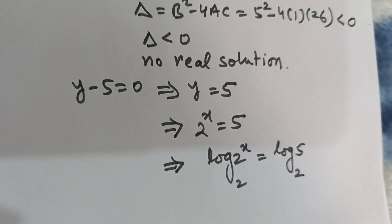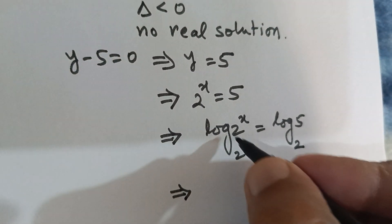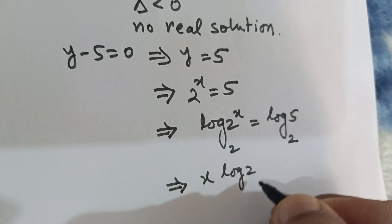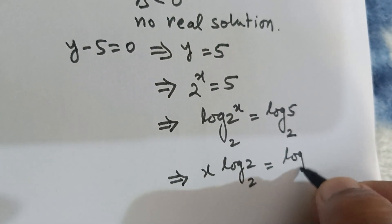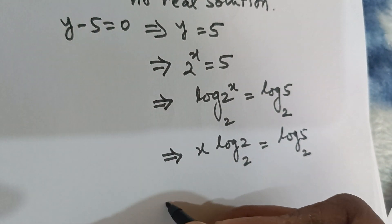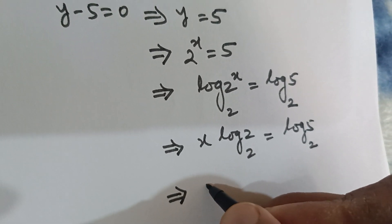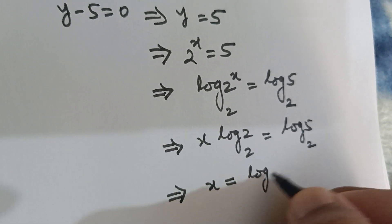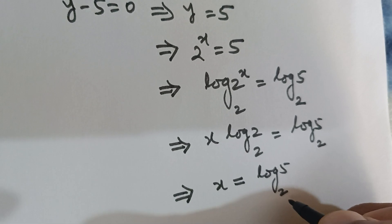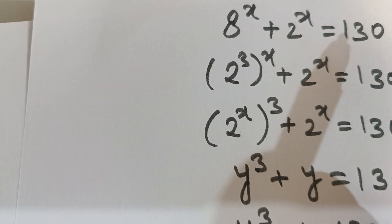I have x·log₂(2) = log₂(5). But we know that log₂(2) = 1, so finally we get the value of x as log₂(5), and this is the solution of this problem. Thank you.